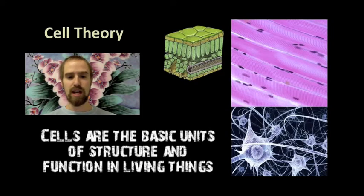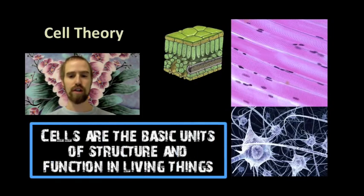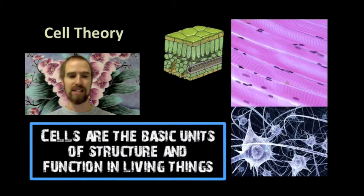Cell theory also states that cells are the basic units of structure and function in living things. Basically, this means that cells are the smallest units of life, because they perform all of the basic functions of life, like taking in nutrients and transforming energy, metabolizing molecules, and getting rid of waste. Cells even reproduce and grow and develop over time.